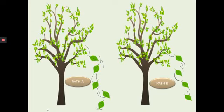From the above examples we can conclude that when an object travels from one place to another, it will reach faster if it travels along a straight line path. The straight line path is the shortest distance between two points.